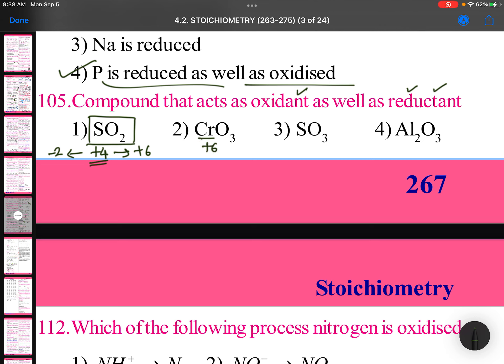Here it is plus 6. Highest state, so it cannot undergo oxidation, it can undergo only reduction. So oxidizing agent plus 6, maximum oxidizing agent. Al2O3 plus 3, maximum.